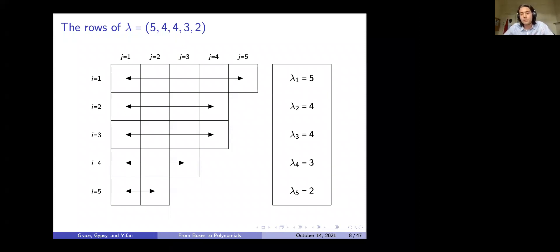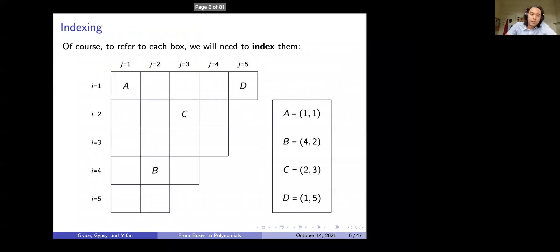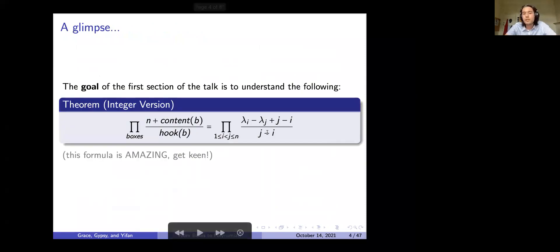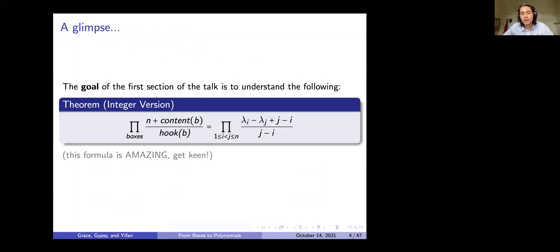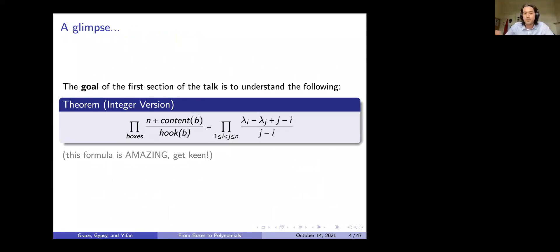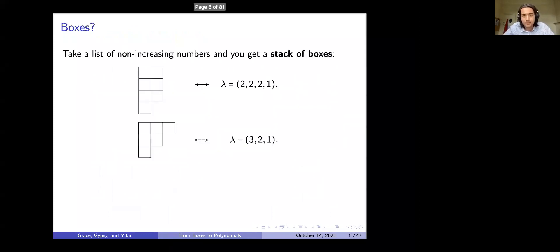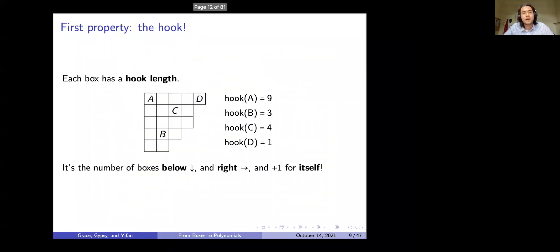I'm giving a name to the number of boxes in a row, which will help us later. Going back to the theorem, the lambda_i's and lambda_j's correspond to rows, and the j − i terms relate to indexing. Now we move on to the left-hand side: we want to understand the content of a box, the hook of a box, and this n. Let's look at our first property — the hook.